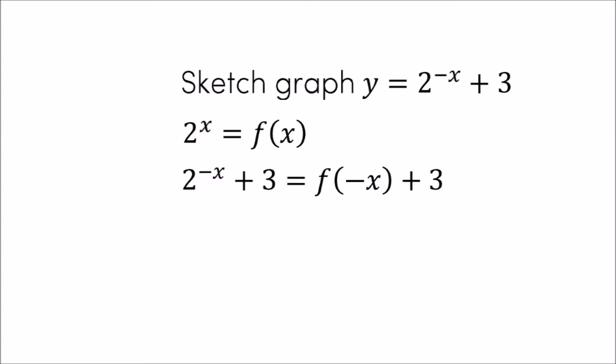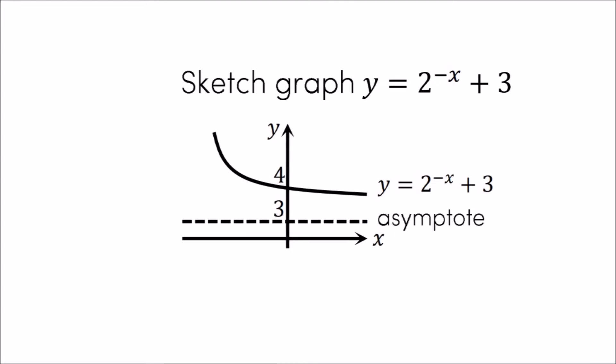This means our normal looking exponential graph 2 to the power of x is reflected in the y axis and translated up 3 to become the graph y equals 2 to the power of minus x plus 3. So the asymptote and y intercept are 3 higher than with a basic exponential graph at 3 and 4 on the y axis.